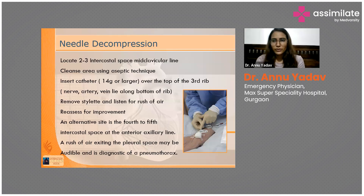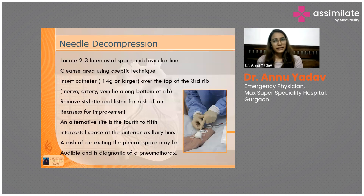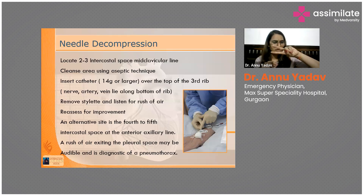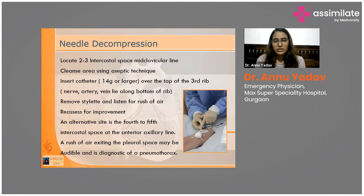After putting needle decompression, reassess your patient for improvement. There is an alternative site: rather than inserting over the second intercostal space, you can insert over the fifth intercostal space at the anterior axillary line. This is in the 10th edition of ATLS — they prefer the fifth intercostal space, anterior axillary line. Consider the upper border of the fifth rib, insert the needle the same way, and you will feel a gush of air coming out from the pleural cavity, then connect it with the negative suction seal.